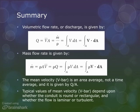So, to summarize this lecture, volumetric flow rate or discharge is given by velocity times area or m dot over rho, or you may have to evaluate an integral for V dot dA.